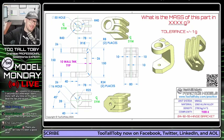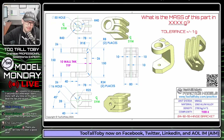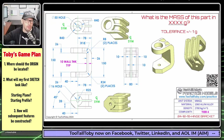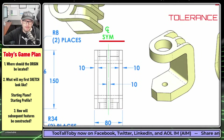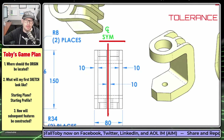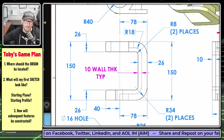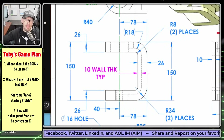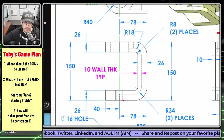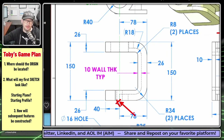Before you create any 3D model you want to start out with a game plan. The game plan should start with asking: where should the origin be located? The first thing to look for is does the model have symmetry - that's going to be apparent by the CL SYM notes. There's a line of symmetry going right down through the model, so the origin is going to be right at the center.